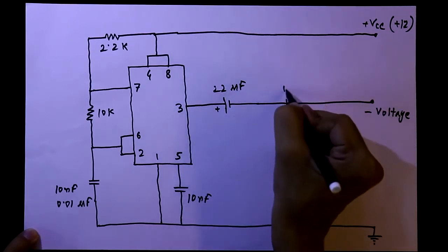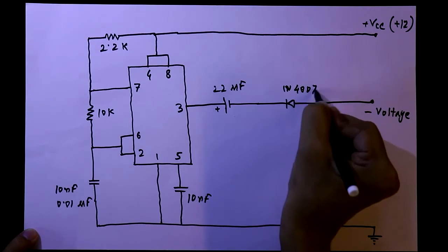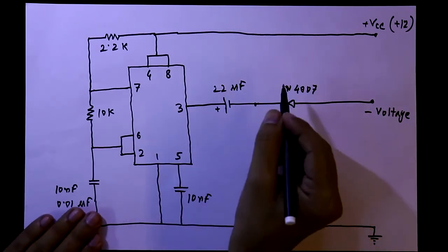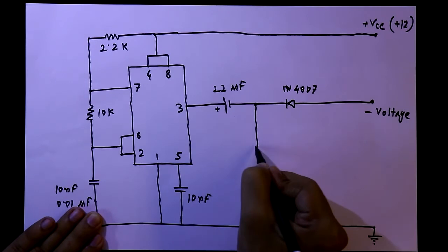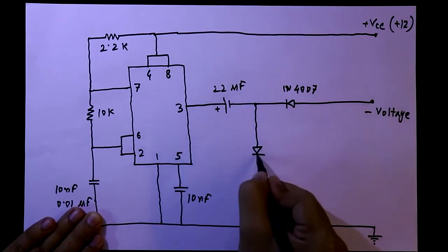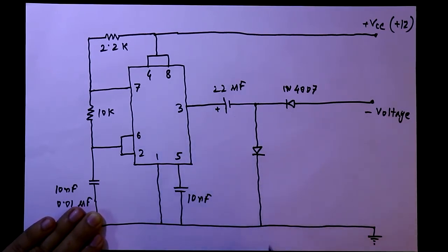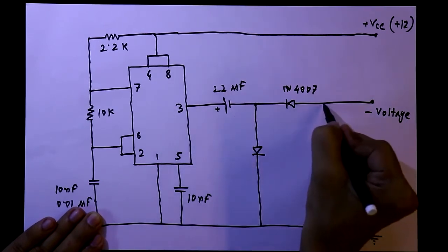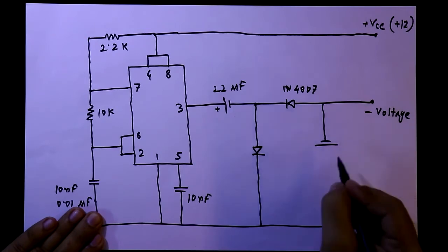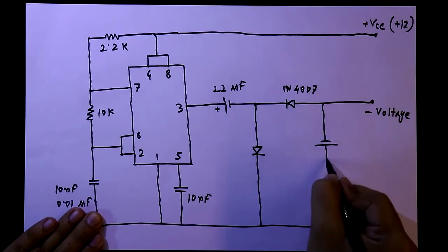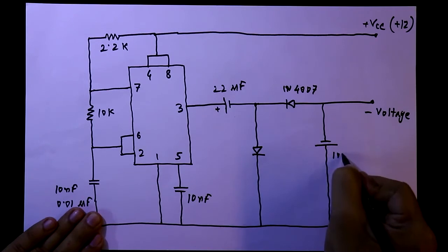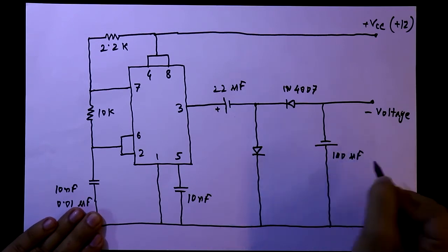It is a normal diode, 1N4007. In between these two components, we have to connect another diode. Its anode pin is connected here and the cathode pin is connected to ground. We also have to connect one capacitor here — its negative pin is connected here, and the positive pin is connected to ground. Its value is 100μF.